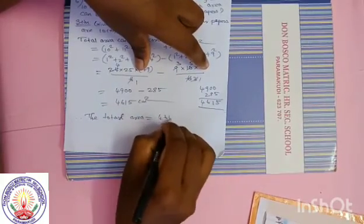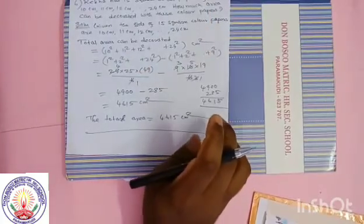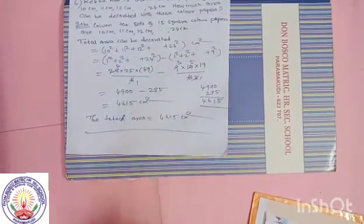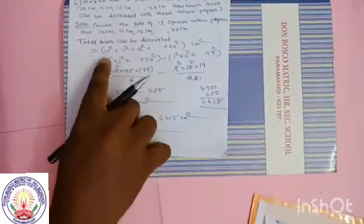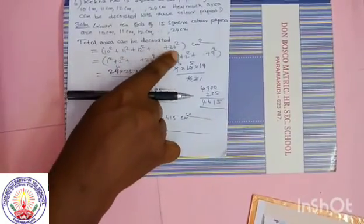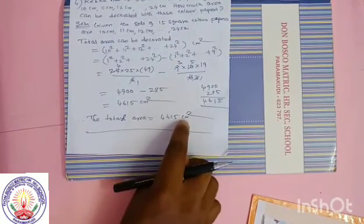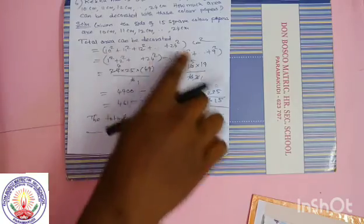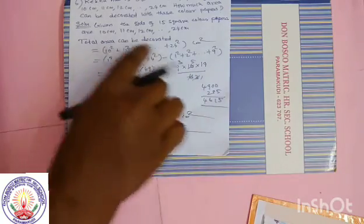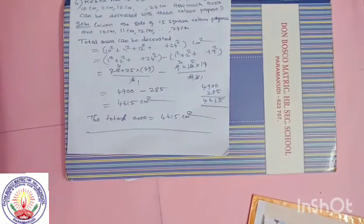So the area to be decorated is equal to 10 squared plus 11 squared plus dot dot dot plus 24 squared equals 4615 centimetres squared. This is a very important 5-mark question.